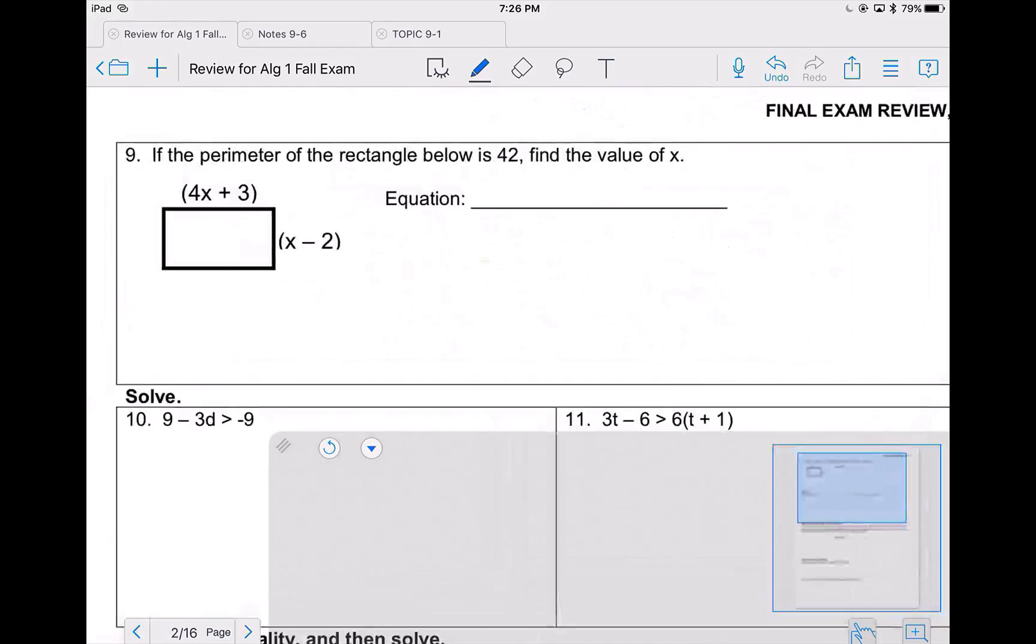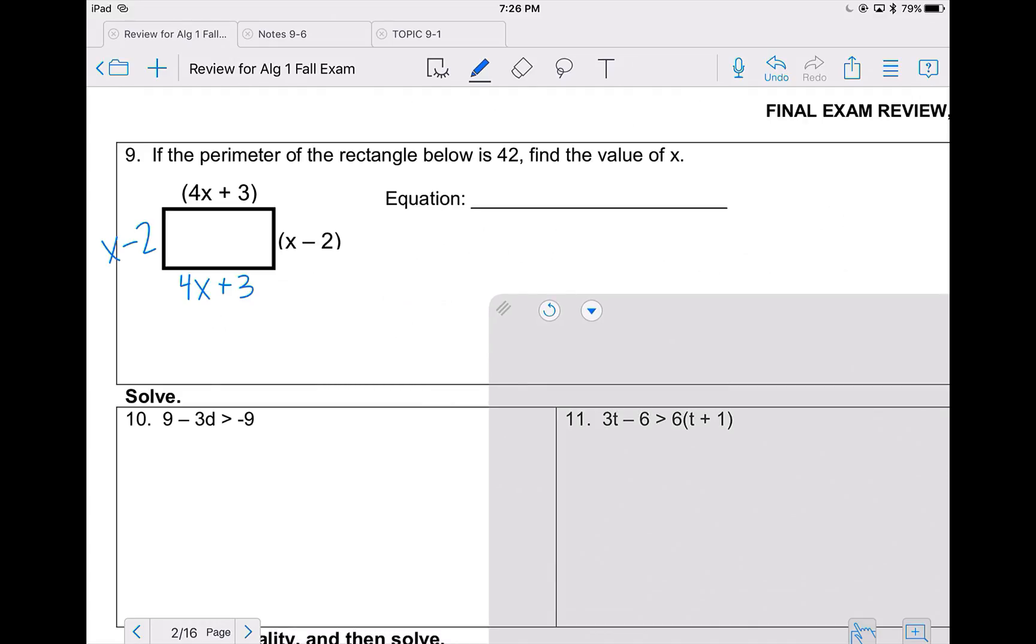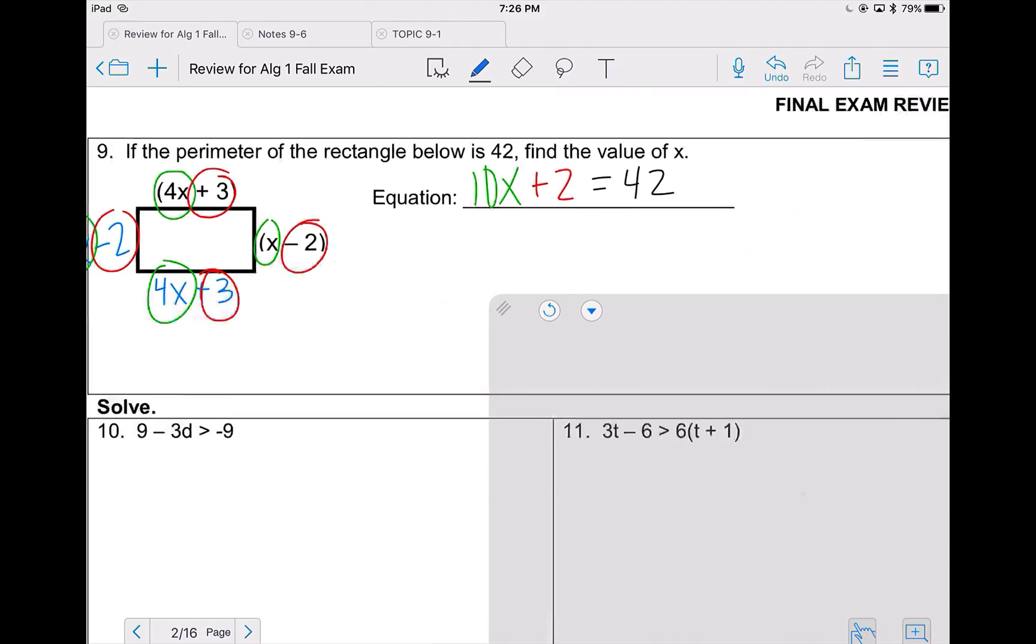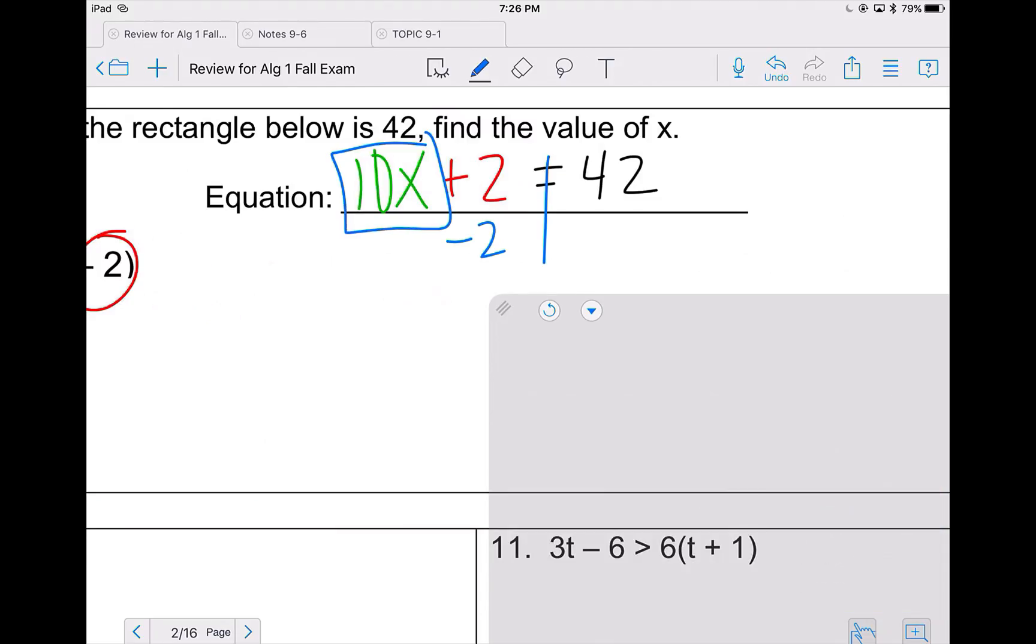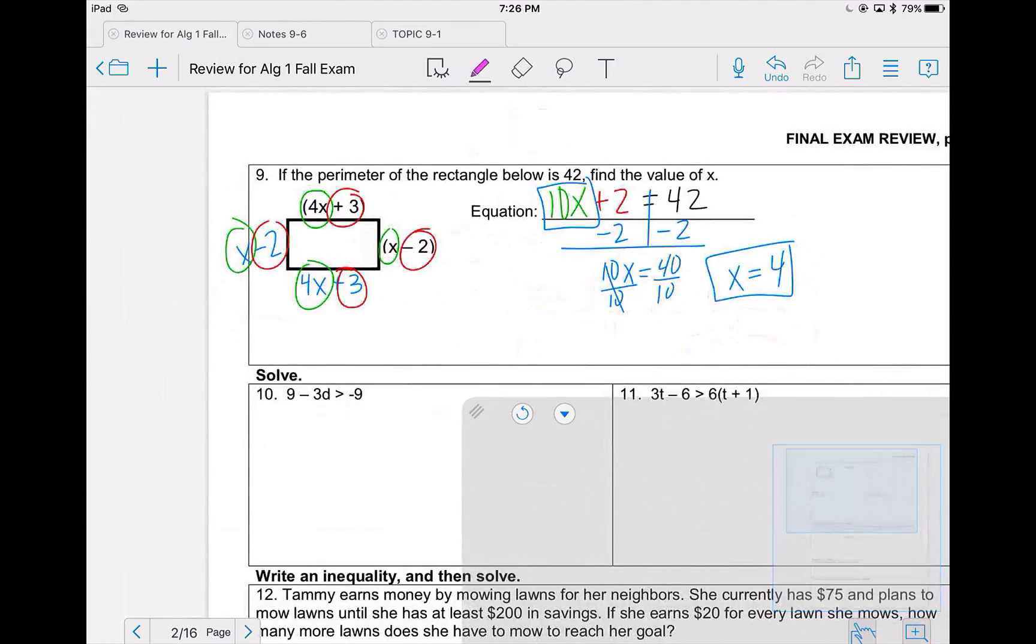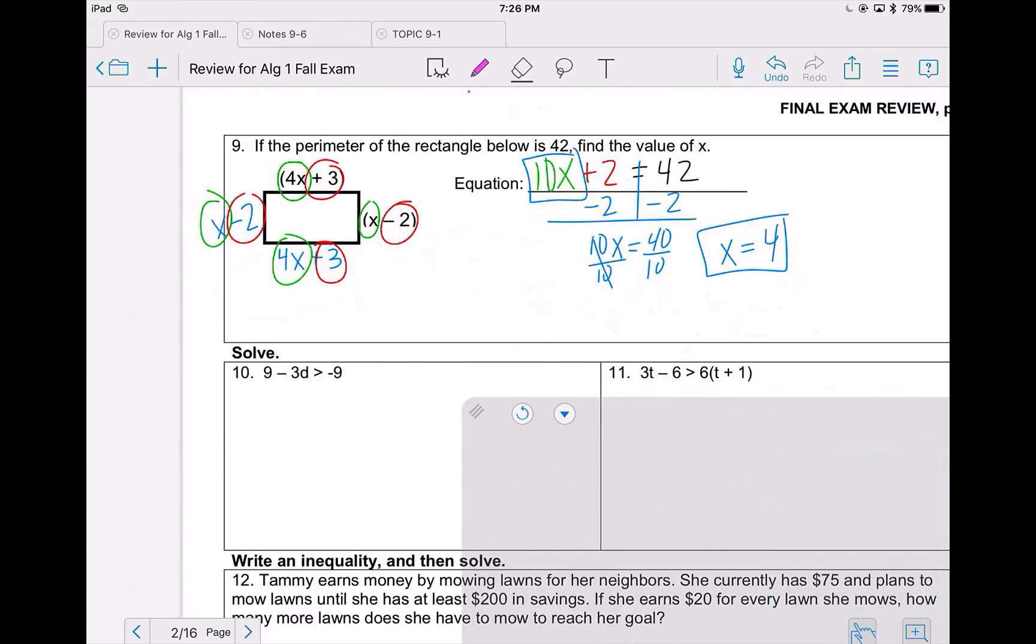Problem 9. If the perimeter of the rectangle below is 42, find the value of x. So we know that with a perimeter of a rectangle, you will add up all the sides. So I'm filling in my sides. Left side is the same as right. Top is the same as bottom. For my base equation, I'm going to combine my like terms. So I have 4x plus x plus 4x plus x for a total of 10x. Plus 3 minus 2 plus 3 minus 2 is a total of 2. And that equals my perimeter. So remember for perimeter, we add up all the sides. In order to solve for x, I will move 2 to the other side through subtraction. So 10x equals 40. Divide everything by 10, 40 divided by 10 is 4. Note that it does just ask you for the value of x.